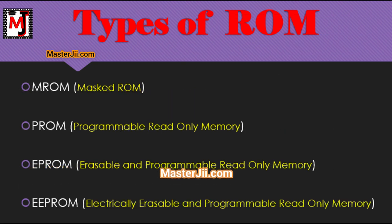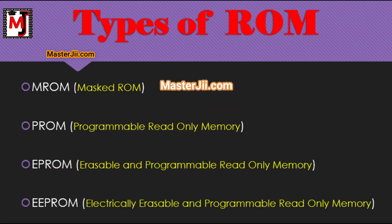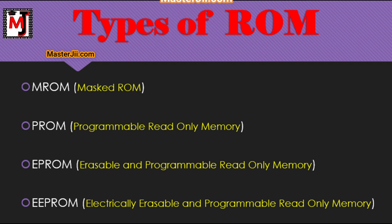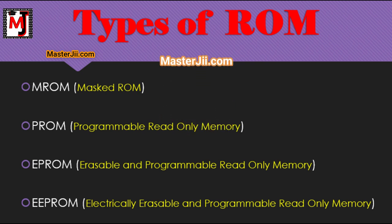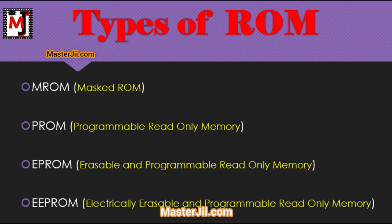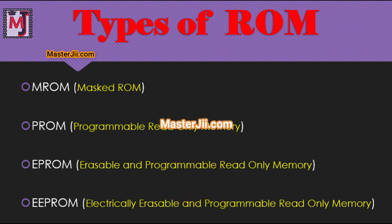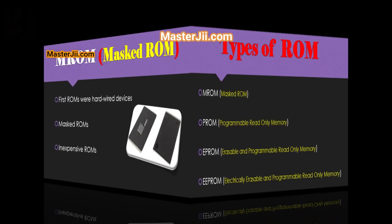Now we will discuss the types of ROM. First is MROM — Masked ROM. Second is PROM — Programmable Read Only Memory. Third is EPROM — Erasable and Programmable Read Only Memory. Fourth is EEPROM — Electrically Erasable and Programmable Read Only Memory.